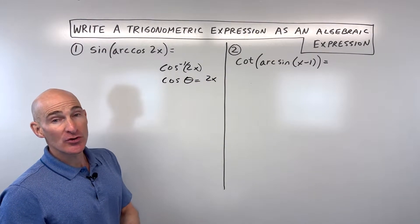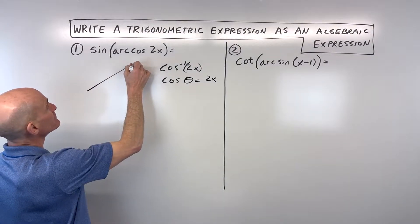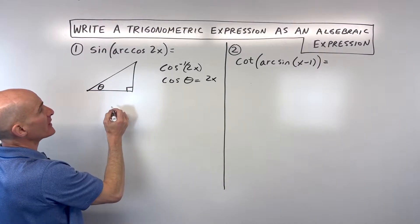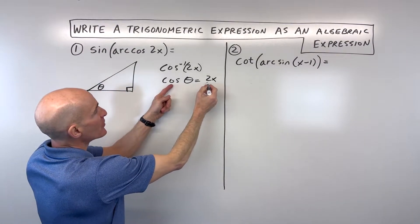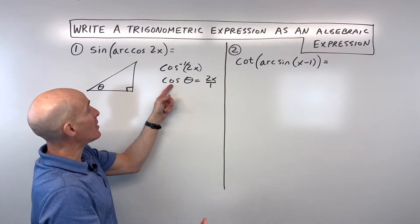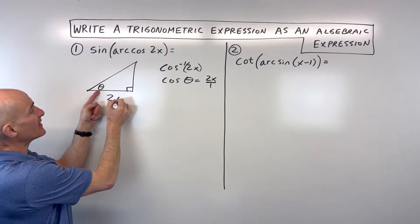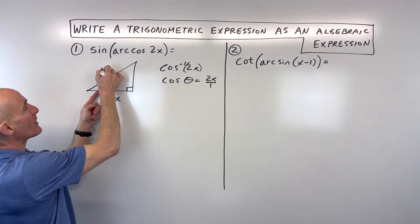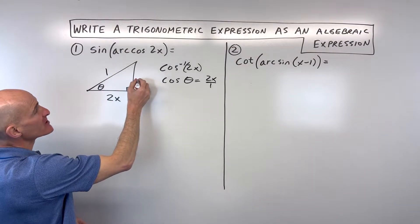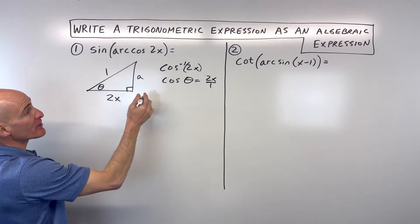Now what we're going to do is draw a triangle just like this. Here's our right triangle, here's our angle theta, and cosine — you can write this as 2x over 1. Anything divided by 1 is itself. So the cosine of this angle is the adjacent side, 2x, over the hypotenuse, which is 1. Now if we want to solve for this side right here, let's just call this side a, we can use the Pythagorean theorem.